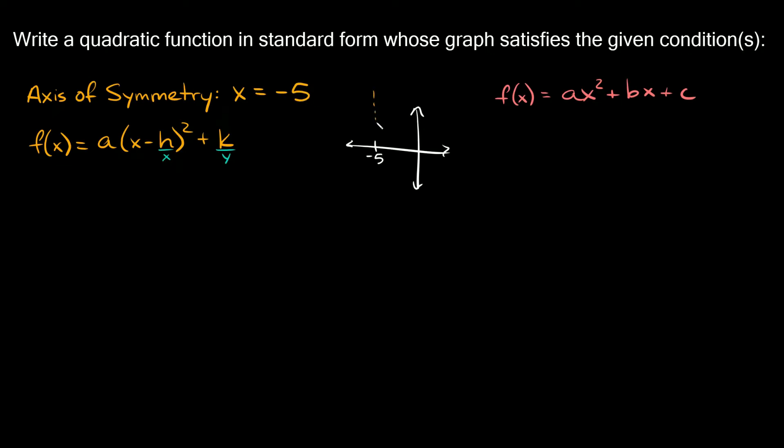Well then I know the axis of symmetry is a vertical line like that, and the other thing we know is that the axis of symmetry runs through the vertex. So that means the vertex is somewhere along this line, which means we know the x coordinate for the vertex. The vertex is at negative 5 comma something. We don't know what this something is, but we do know the x coordinate is negative 5.